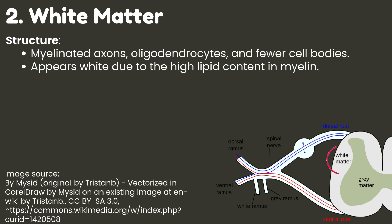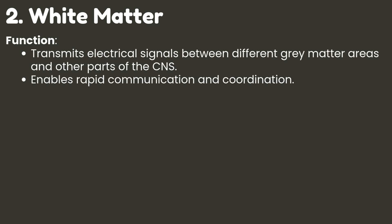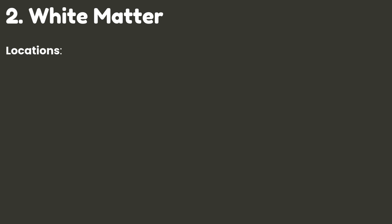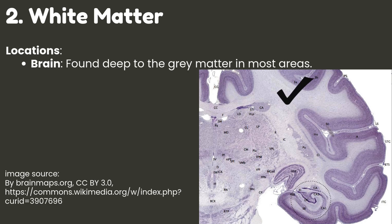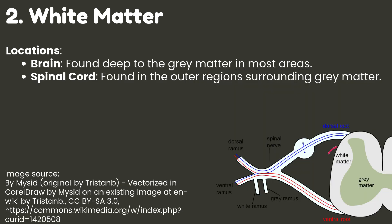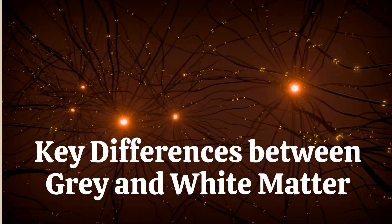White matter appears white due to the high lipid content in myelin. Function: it transmits electrical signals between different gray matter areas and other parts of the central nervous system, enabling rapid communication and coordination. Locations: in the brain it is found deep to the gray matter in most areas; in the spinal cord it is found in the outer regions surrounding the gray matter.